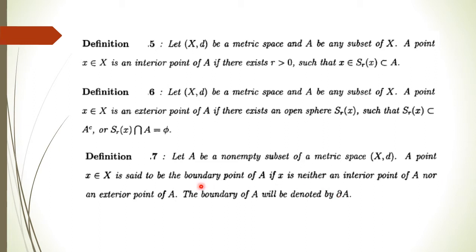To clarify: a boundary point of A is one where the open sphere around X is neither completely contained in A nor completely contained in the complement of A — meaning X lies at the boundary of the set A.